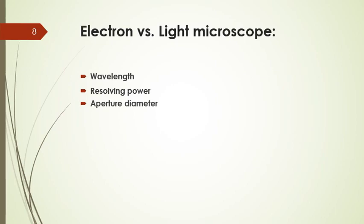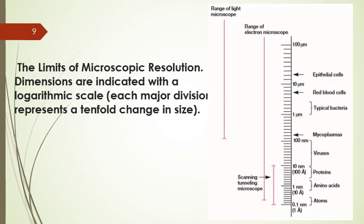When comparing electron and light microscopy, the baseline comparison involves wavelength, resolving power, and aperture diameter — these are the three main domains on the basis of which we compare these two types of microscopy. This slide clearly indicates the differentiation between the range of these two microscopes.